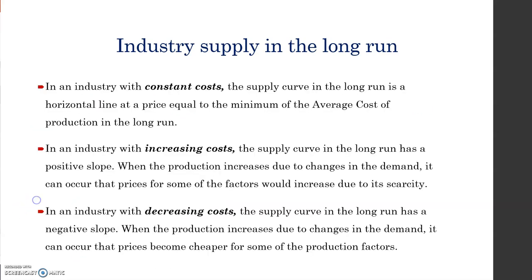In an industry with constant costs, the supply curve in the long run is a horizontal line at a price equal to the minimum of the average cost of production in the long run.